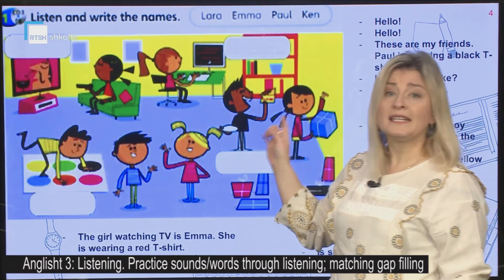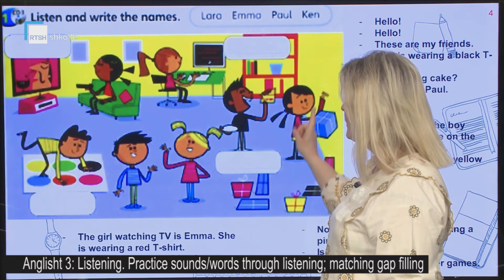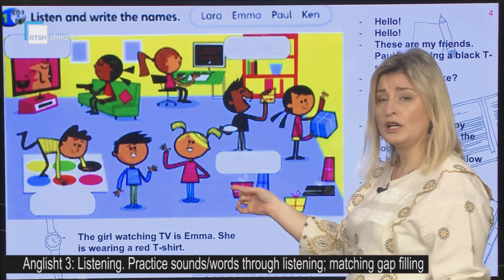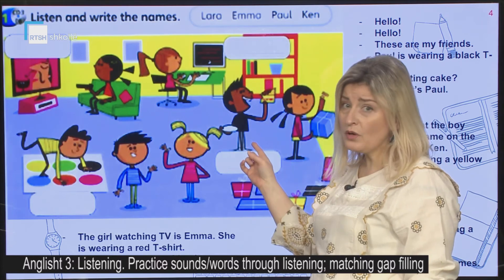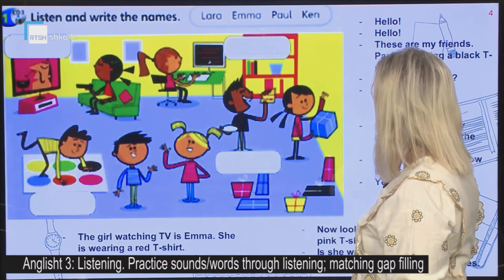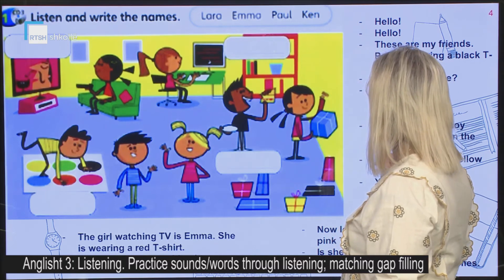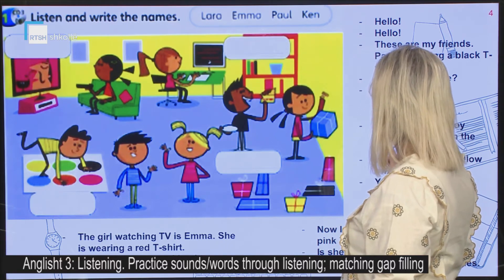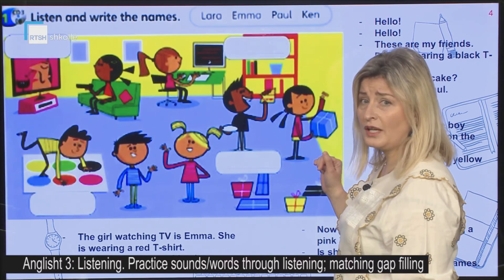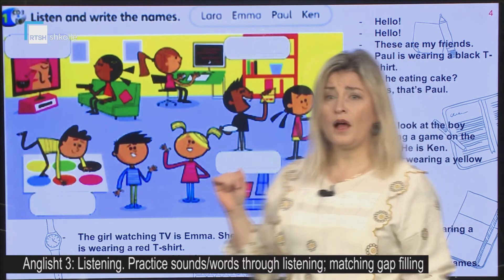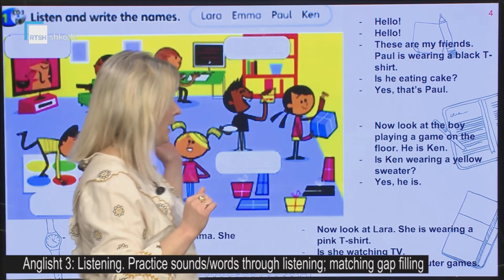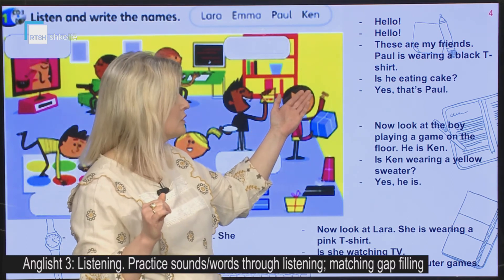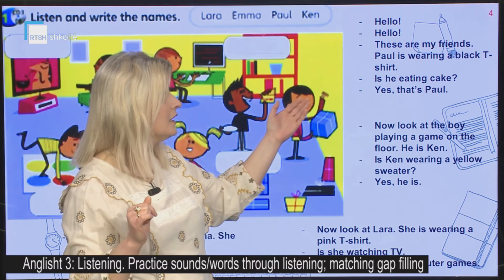Për sëri kemi të bëjmë me listening. Do gjejmë personajin nëpërmjet asaj që do të dëgjojmë. Por ndërkohë, unë kam tekst dhe do e lexojë dhe ju do të gjeni se për cilin personaj bëhet fjalë. Hello, hello, these are my friends. Paul is wearing a black t-shirt. Is he eating cake? Yes, that's Paul. Përshëndetje, përshëndetje. These are my friends. Këta janë shokët e mi. Paul ka veshur një bluzë me mëngë të shkurtra të zezë.